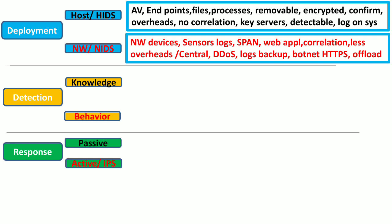The application-based Intrusion Detection System is a special form of network-based IDS because it monitors and analyzes web traffic or traffic with regards to a specific application on the network.